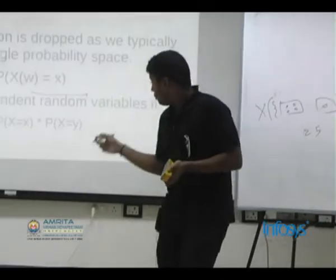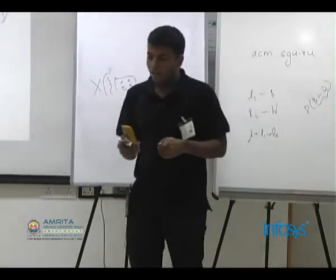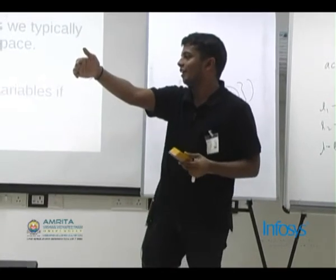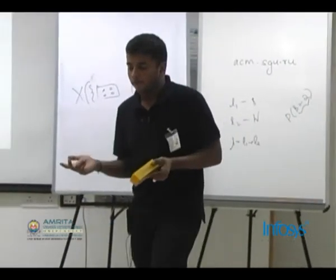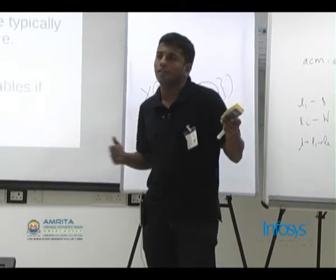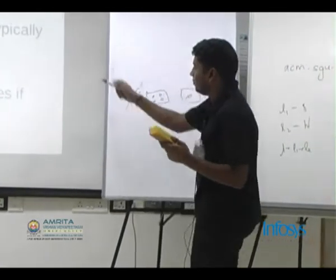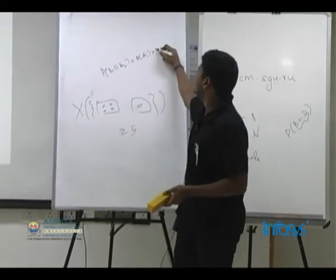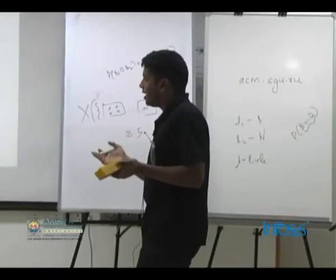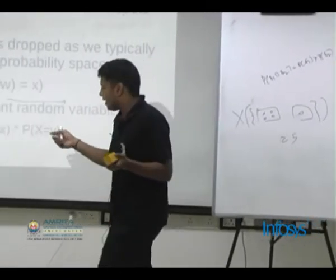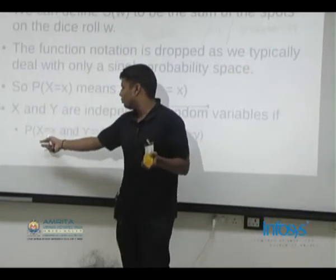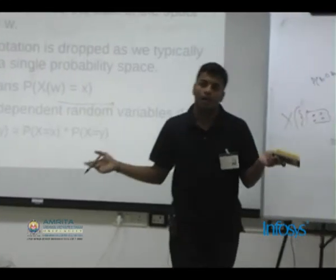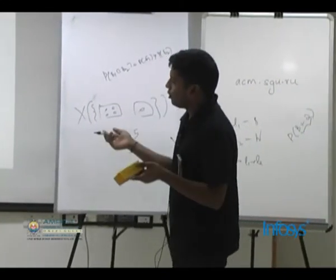We have a concept of independence of events. For example, event E1 might be the probability of me walking from here to there, and E2 would be the probability of someone else walking. Two events are independent if one does not affect the other. For independent events, P(E1 and E2) = P(E1) × P(E2). Similarly, two random variables X and Y are independent if P(X=x and Y=y) = P(X=x) × P(Y=y) for all x and y.